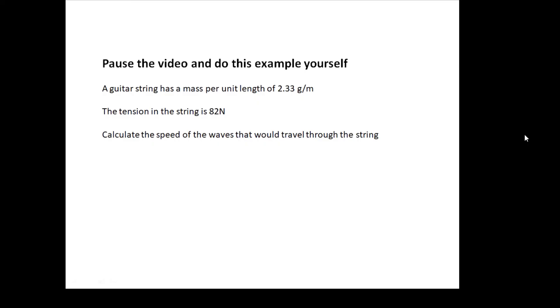Here's a sum for you to do. And the answer is: this. Note that this time I had to say 2.33 × 10^-3 because they gave me the mass per unit length in grams per meter, which is very sneaky. The answer is 188 meters per second.